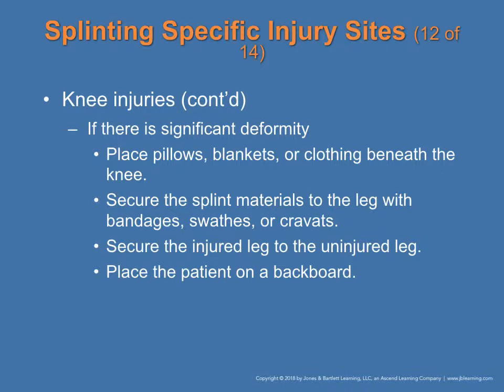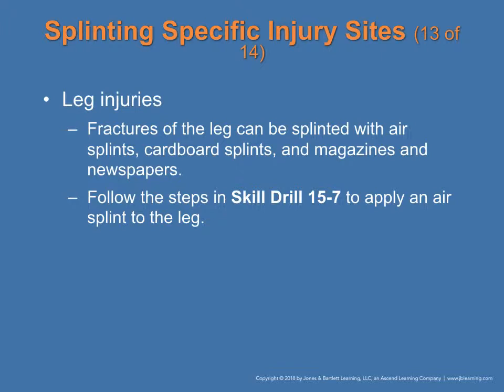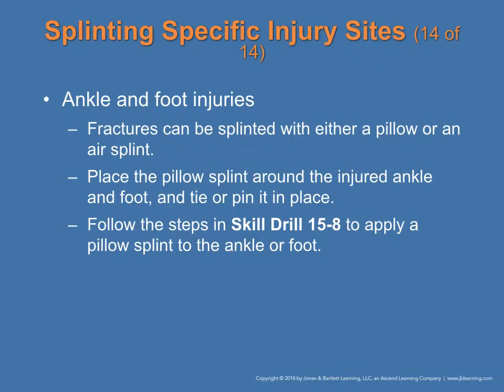If there is significant knee deformity, place pillows, blankets, or clothing beneath the knee and secure the splint material to the leg with bandage swaths or cravats. For ankle and foot fractures, use either a pillow splint or air splint. As an EMR, knowing what improvised materials are available — a stick, wood, metal, or rolled clothing — is beneficial. All of these can be used to stabilize musculoskeletal injuries.